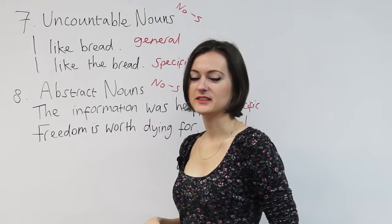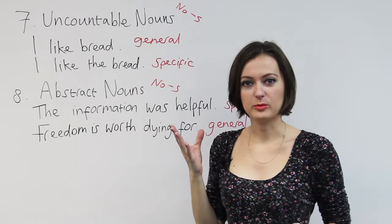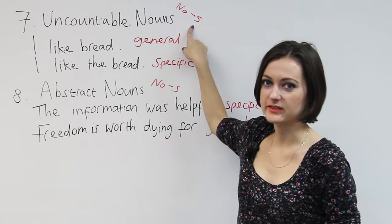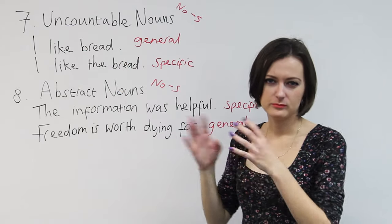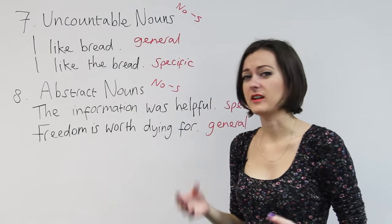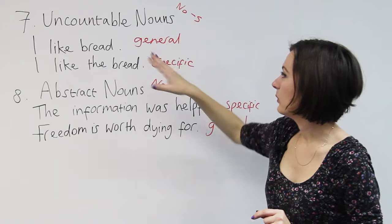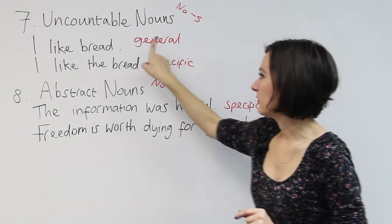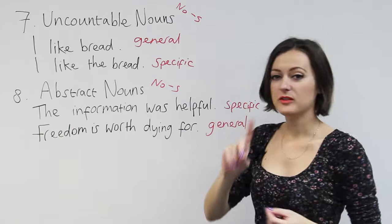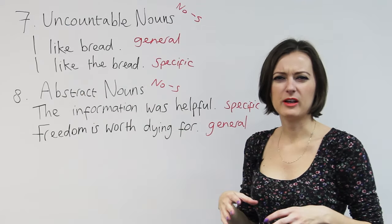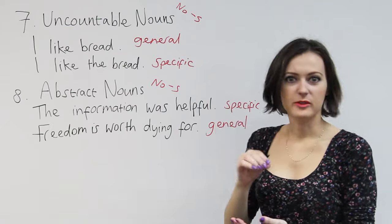Rule number seven is uncountable nouns. These are nouns that we don't add an S to, and we find them most often when talking about food — for example, bread, pasta, rice. These kinds of things are uncountable nouns. Usually we're not going to use 'the' with them if you're talking in general. If you say 'I like bread,' we're talking in general as a statement. But if you say 'I like the bread,' we're talking about something in the room with us, something we can see, something at the table with us — some specific bread.